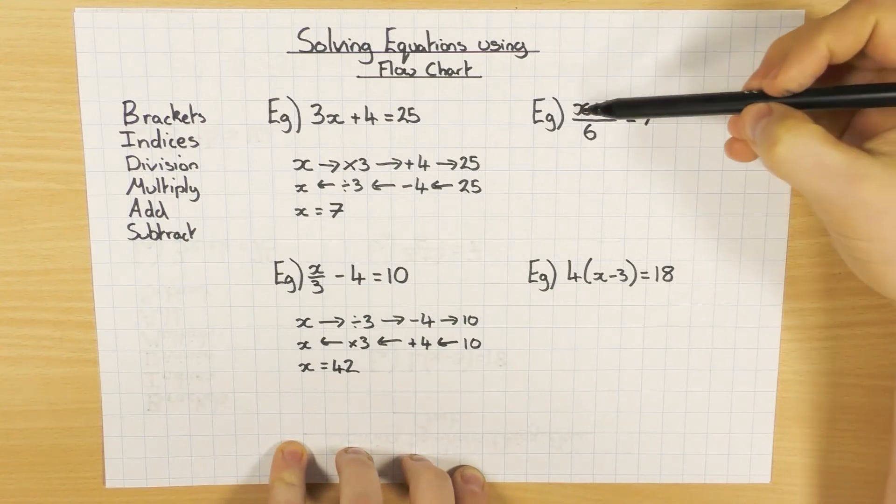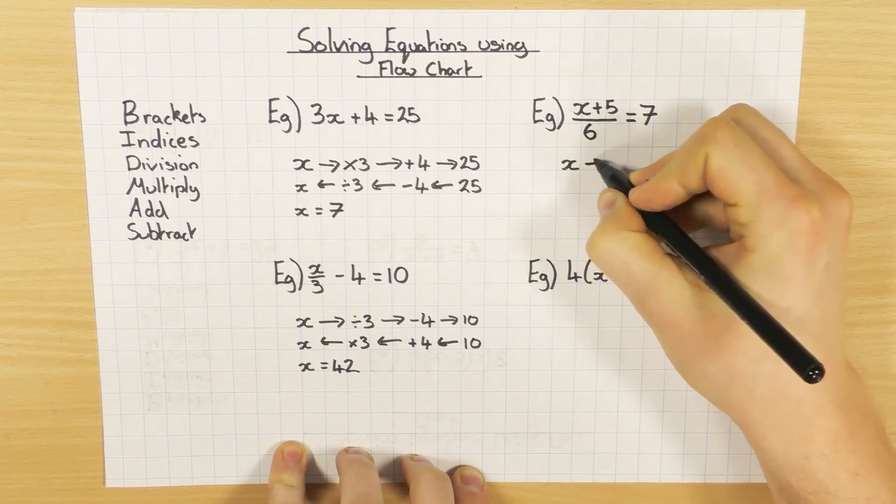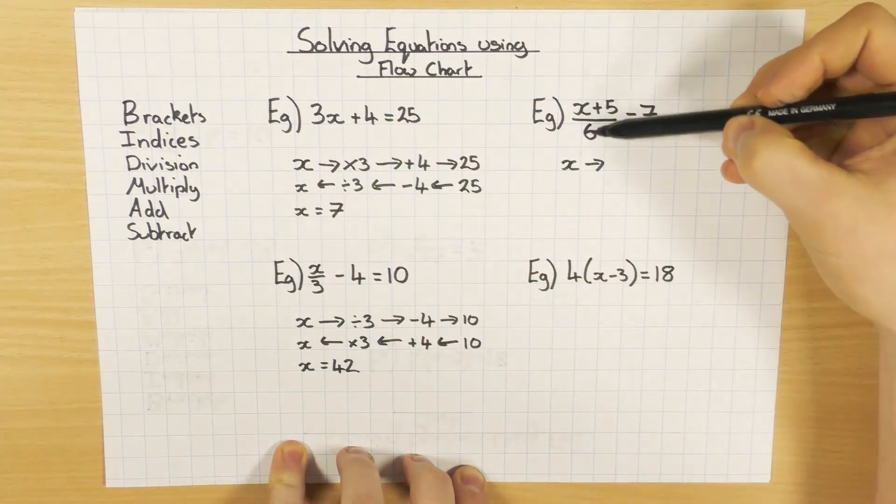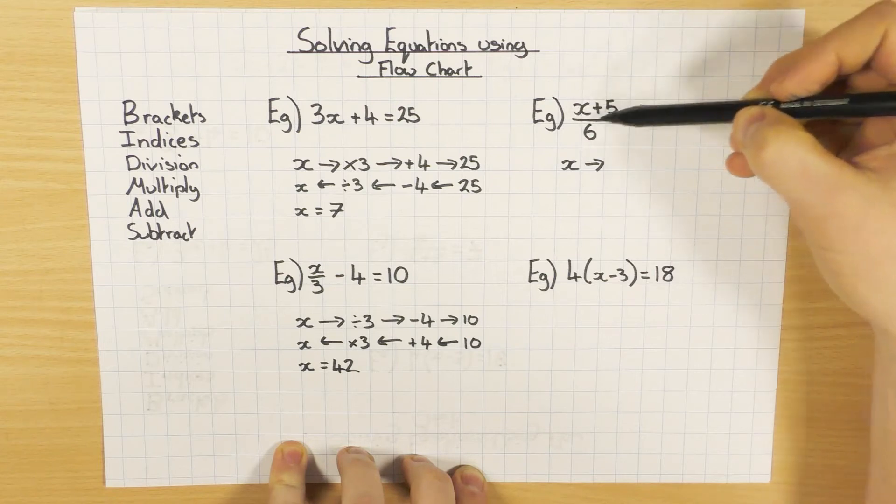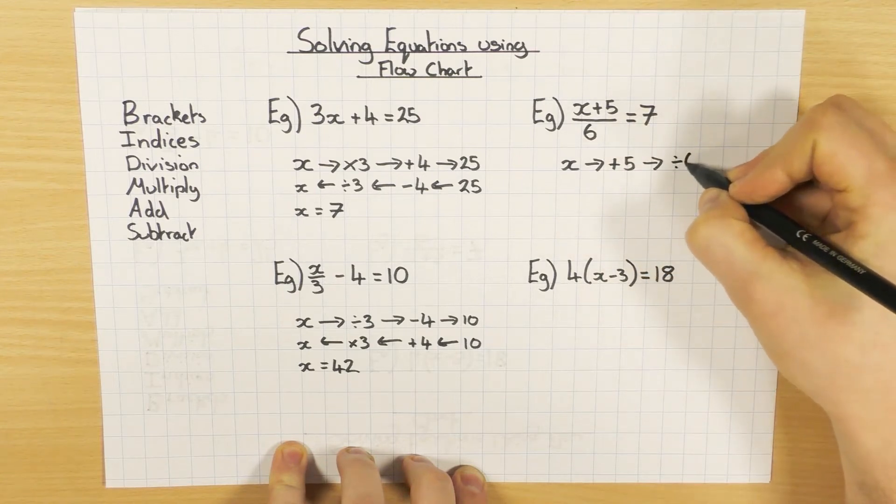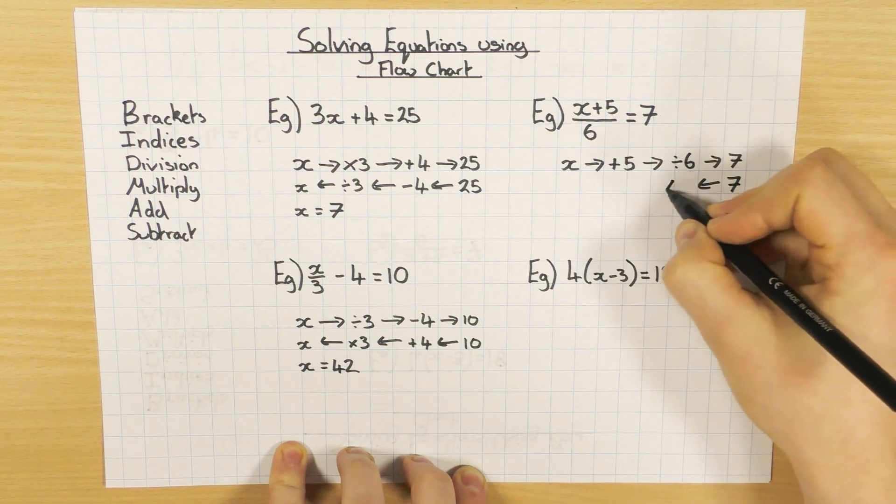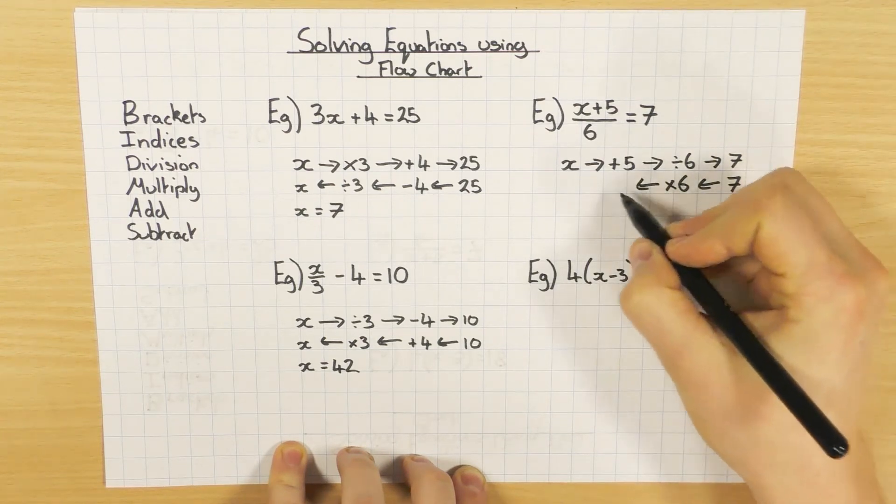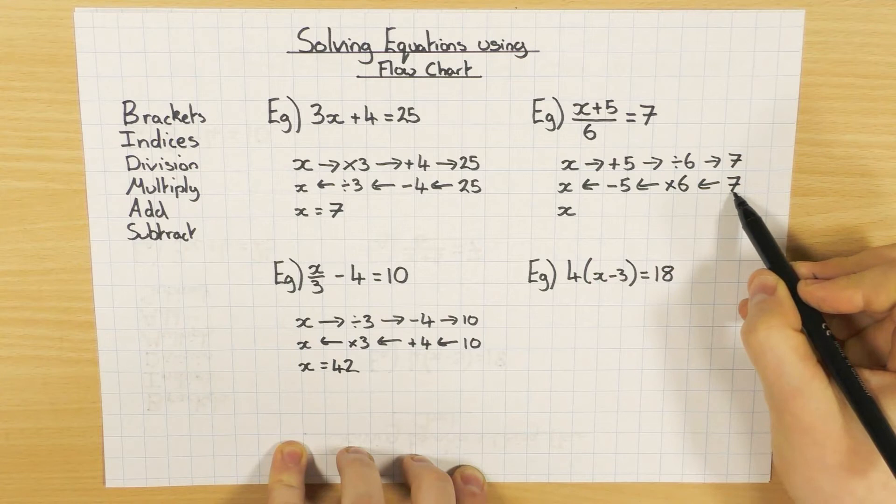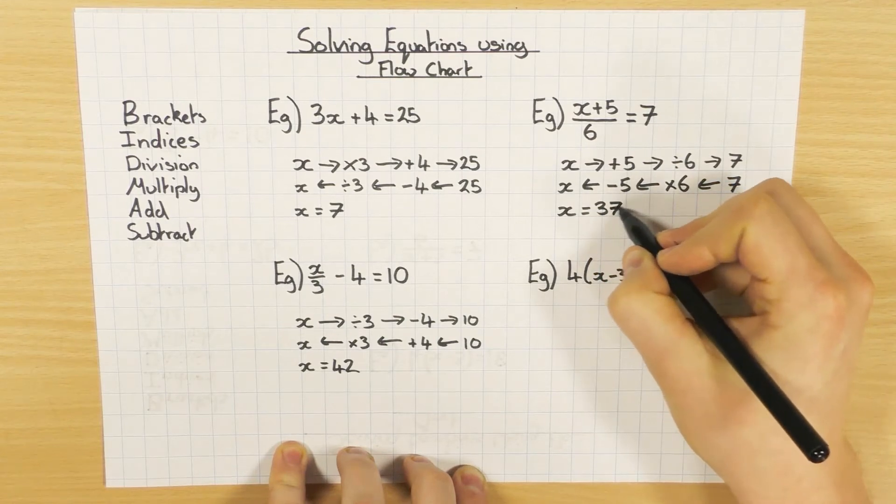Next one over here. Now we've got x plus 5 divided by 6 equals 7, so we have to be careful here. We start off with x, but what are we doing to it first? Well, technically the division comes before the addition, but I can't actually do that division until I've solved what's on top. So in this case, I have to do x plus 5 first before I can then divide by 6. And then of course I have my answer of 7. So going backwards, 7 times by 6, take away 5, and I get back to x. So 7 times 6, 42, take away 5, 37.